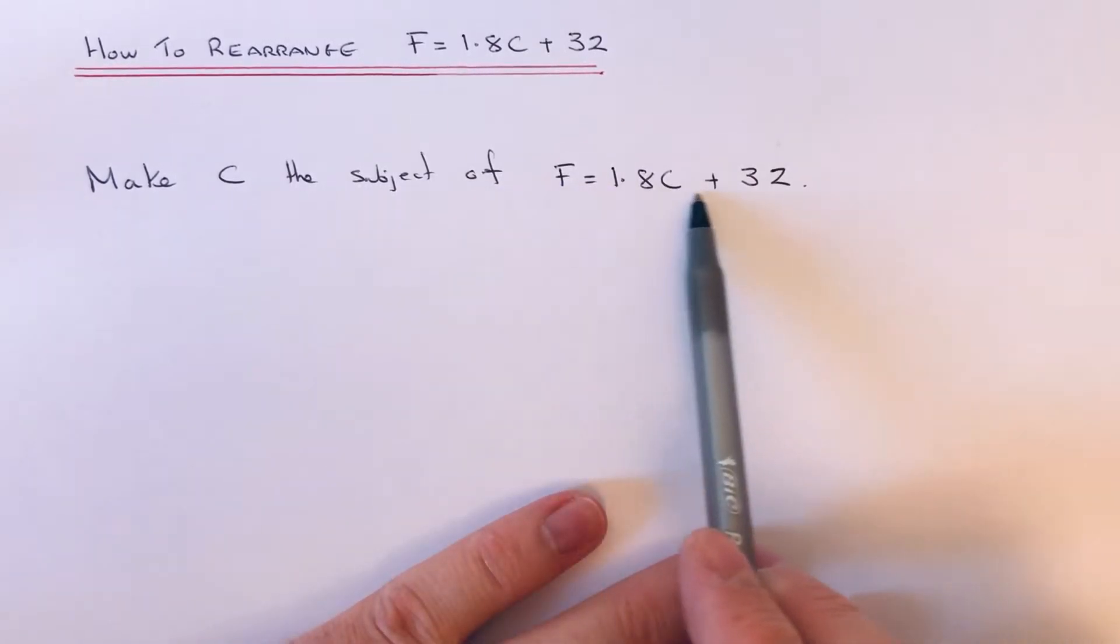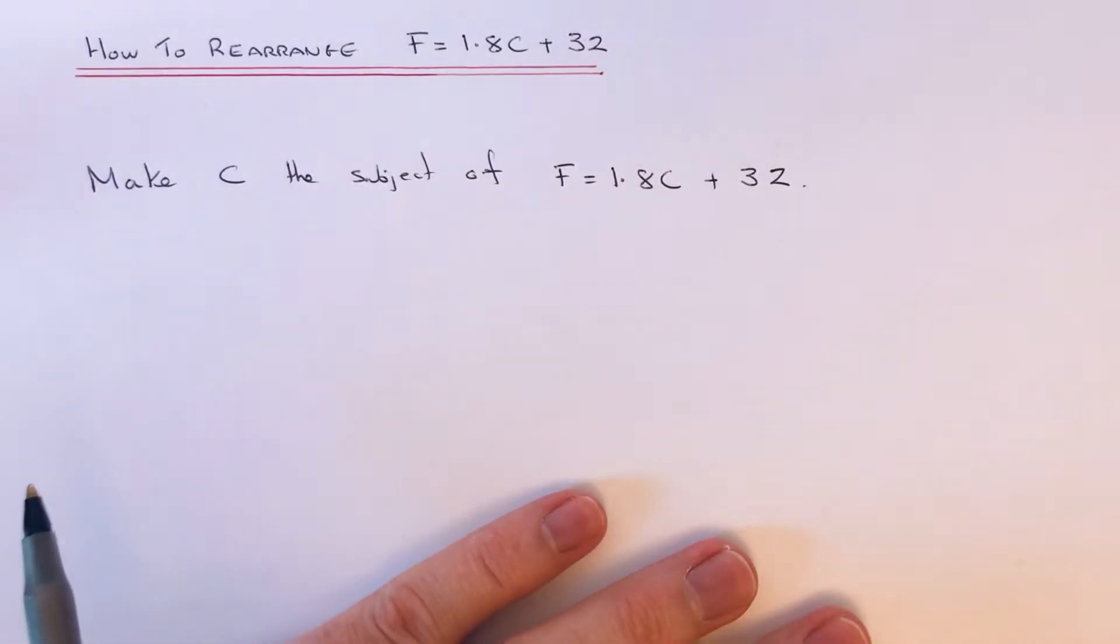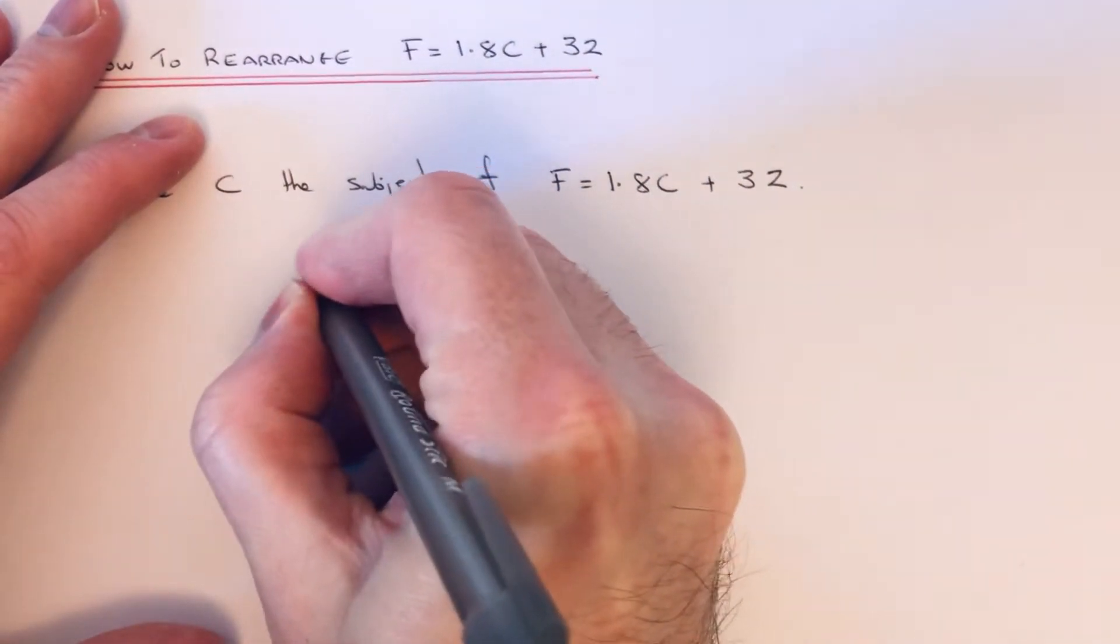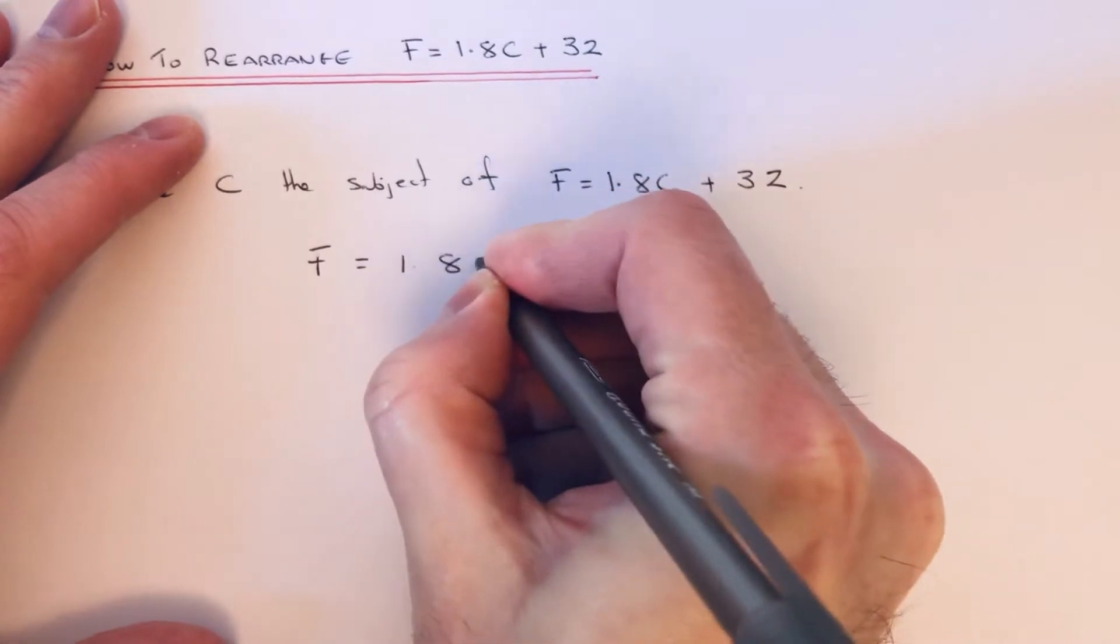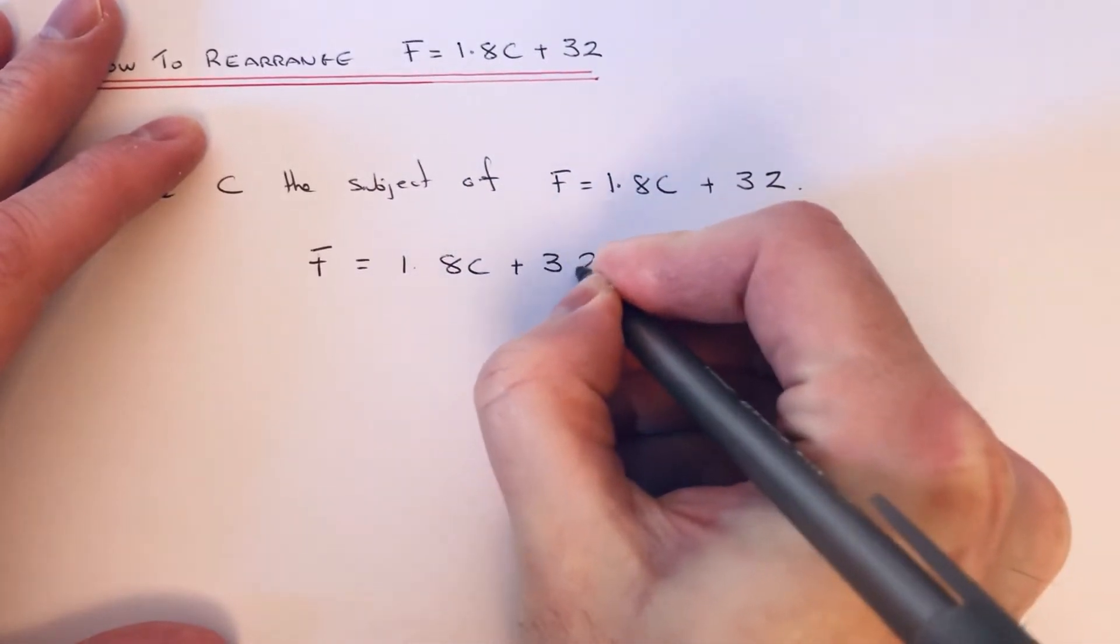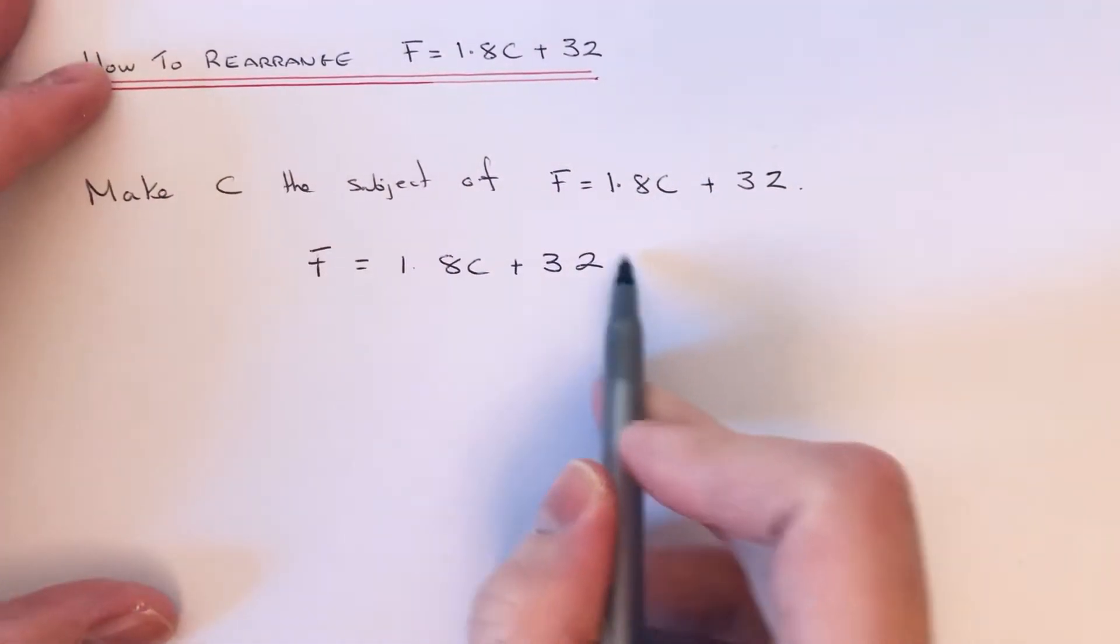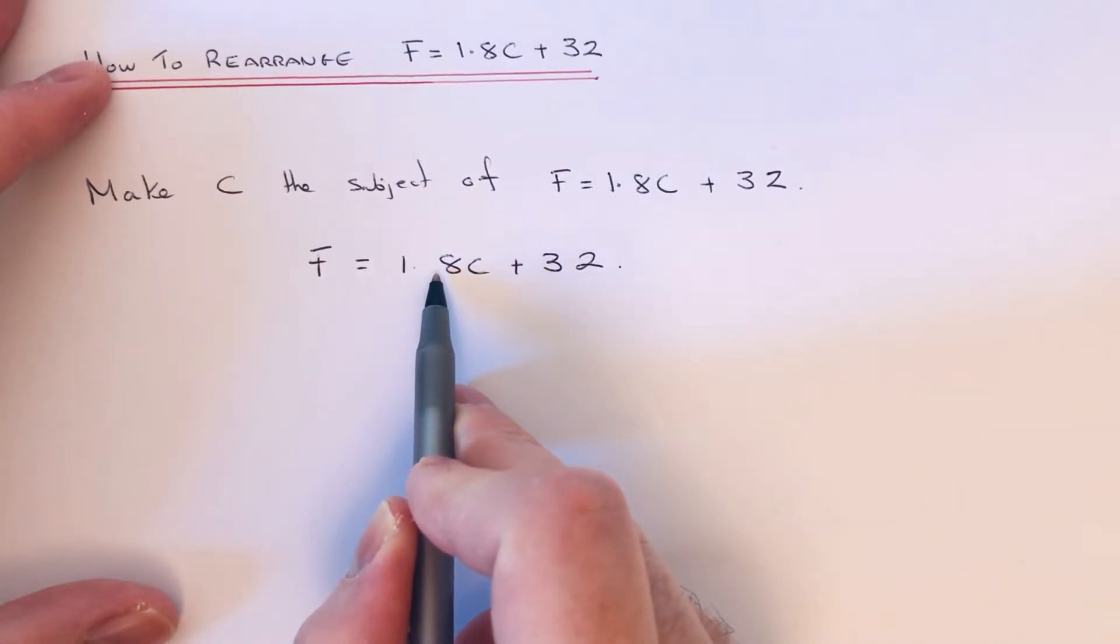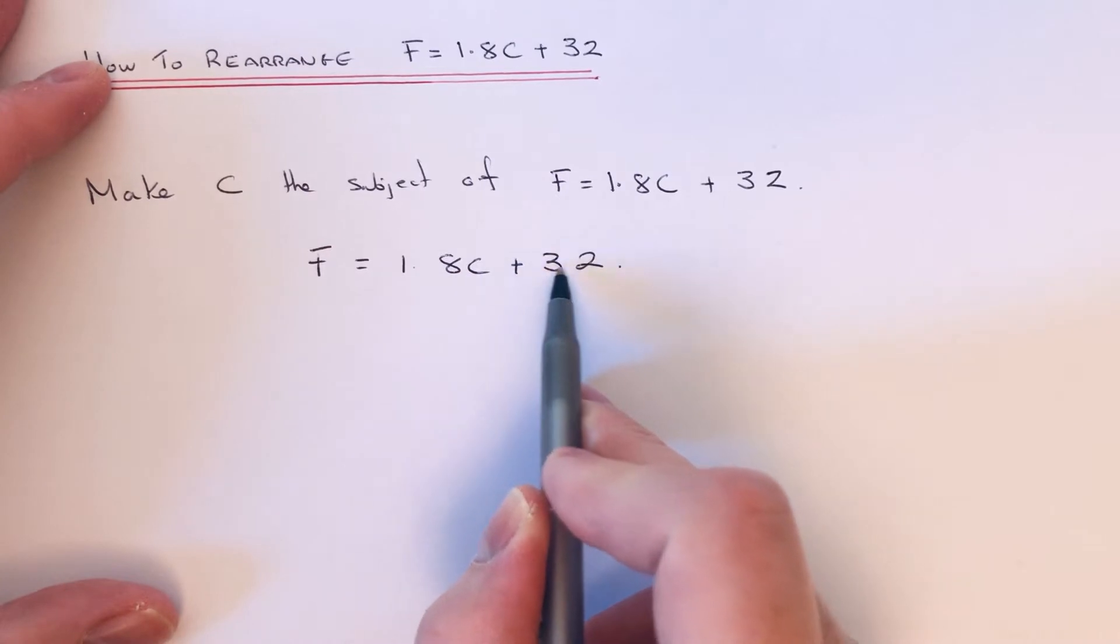So let me show you how to do this. We've got to make C the subject of F equals 1.8C plus 32. Let me copy the formula down first. If we look at the right-hand side of the formula, C is being multiplied by 1.8 and then we're adding on 32.